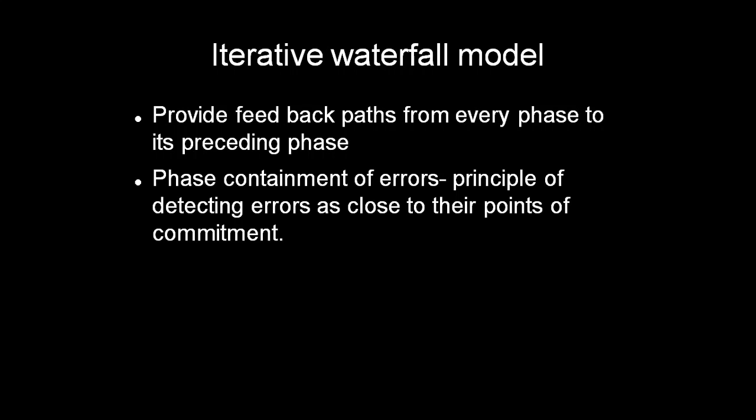If we could correct or detect errors in that phase itself, it will be better. Errors or bugs can occur in software because programmers make mistakes. A design error might be detected only after system testing is performed — then we have to go back, correct the design document, recode, and retest. If we could find out that error in the design phase itself, we can correct it and move forward. This is known as phase containment of errors.